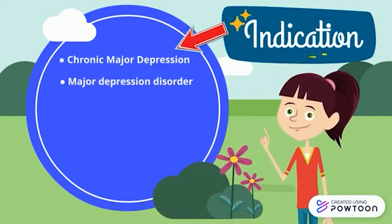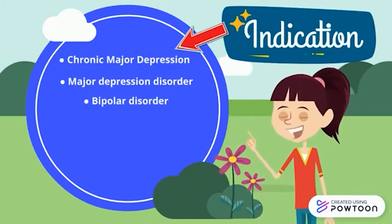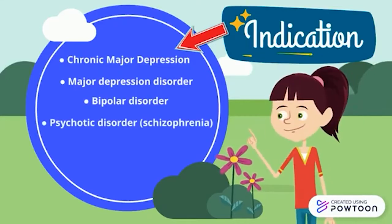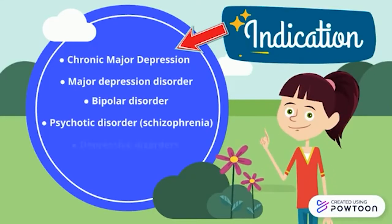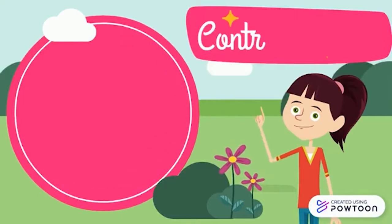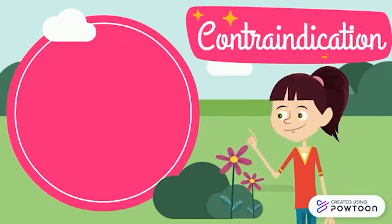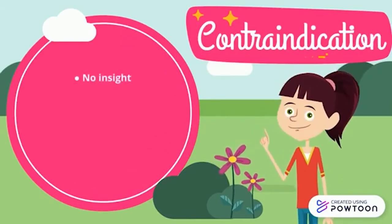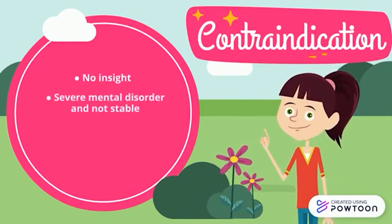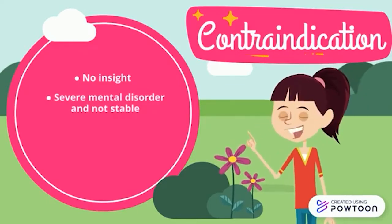QIDS can be used for people who have chronic major depression, major depressive disorder, bipolar disorder, psychotic disorder or schizophrenia, depressive disorders, and asthma. However, it cannot be used for people who have no insight, patients with severe mental disorder who are not stable, and patients who are unable to read.